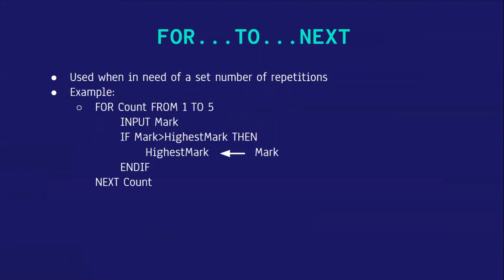First, let's see FOR TO NEXT loop. This is used when we need a set number of repetitions. So here it says FOR count FROM 1 TO 5. This means this process that is inside this loop will take place five times. Here it will input the mark, check if the mark is higher than the highest mark. And if it is, it will change the highest mark to the mark that they just inputted. And it will move on to the next count.